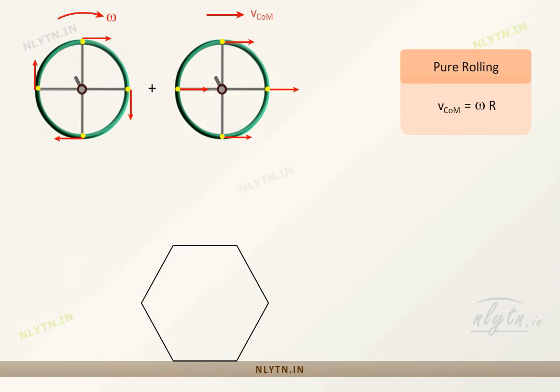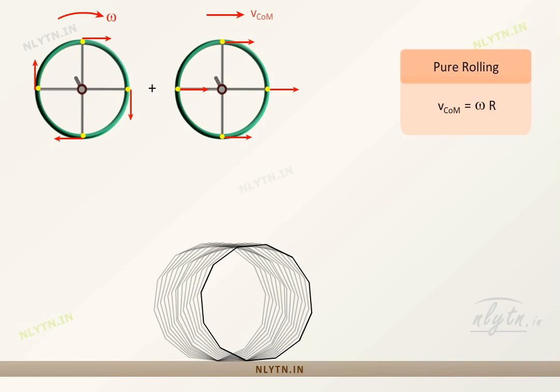Now if we increase the number of sides of our object, then the point of contact will change more frequently, but the instantaneous velocity of the point of contact remains zero.